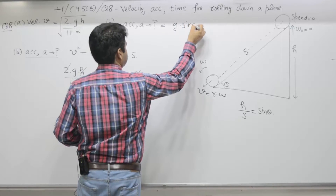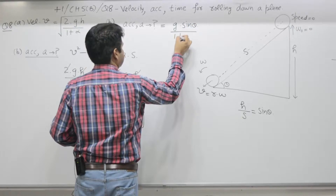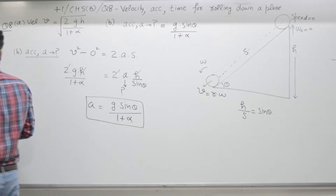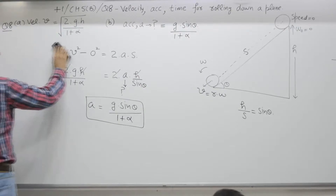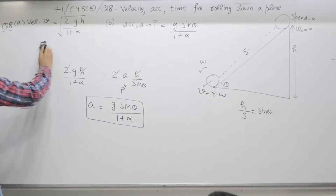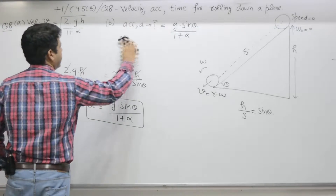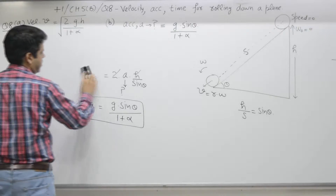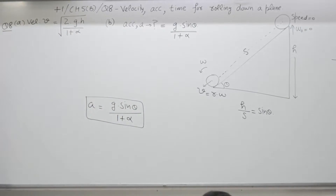The acceleration for rolling is a = g·sinθ/(1+α).